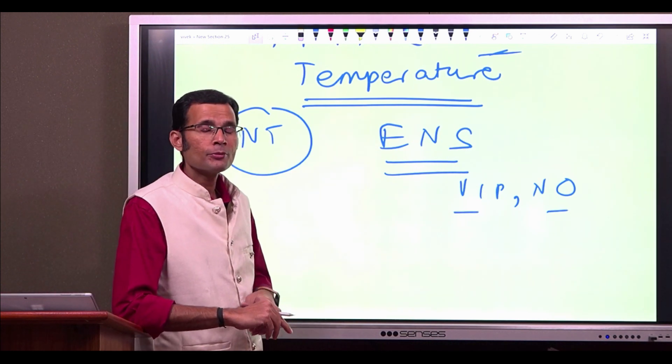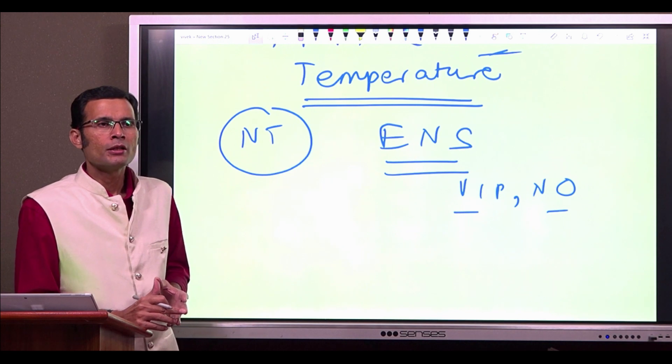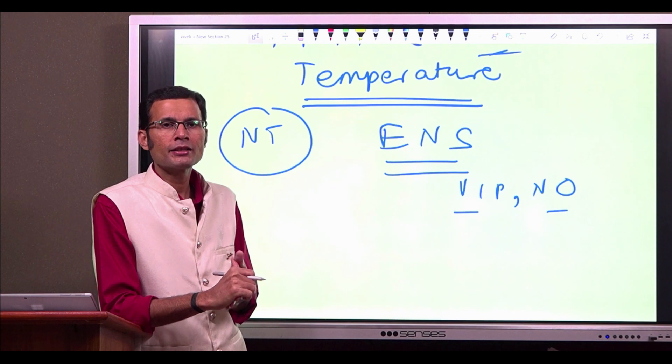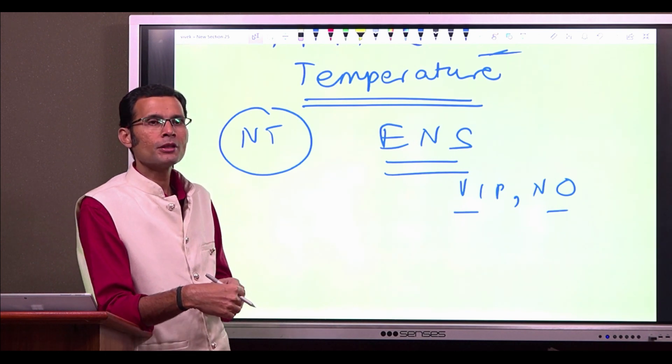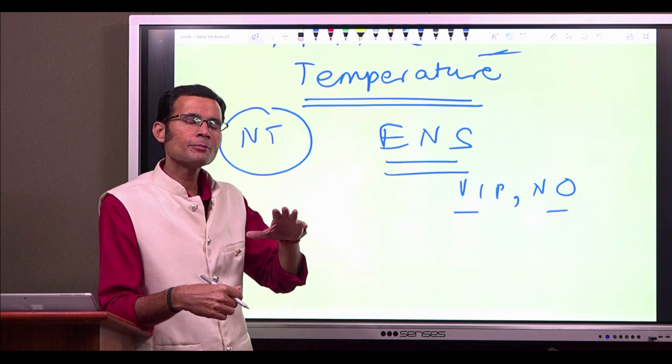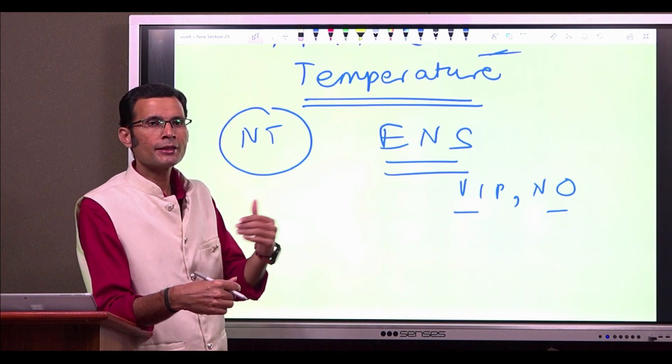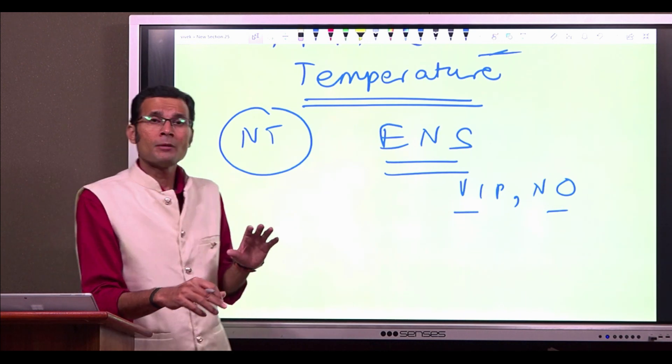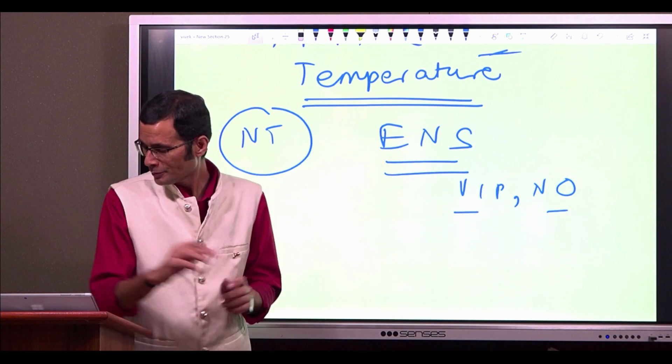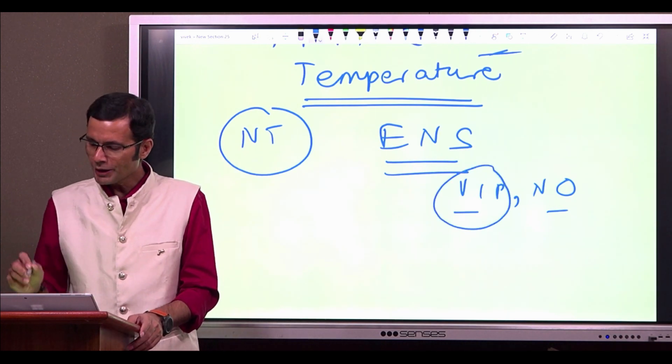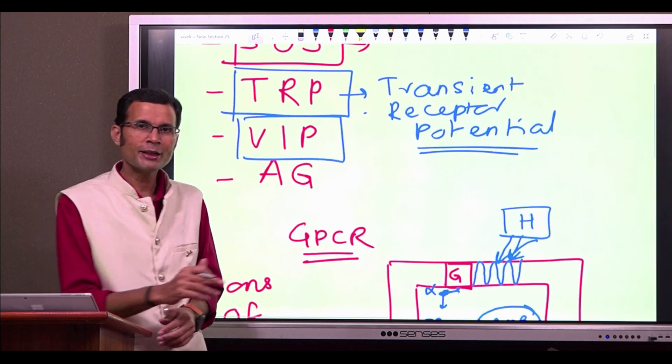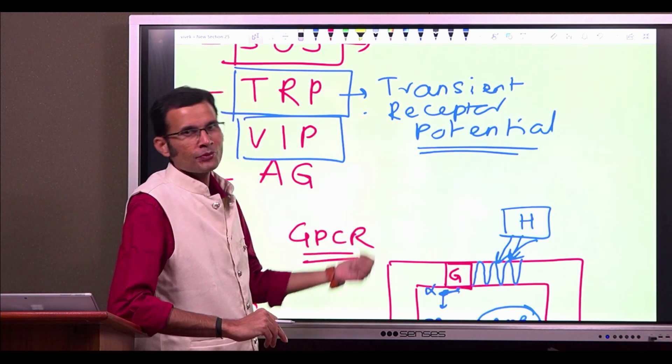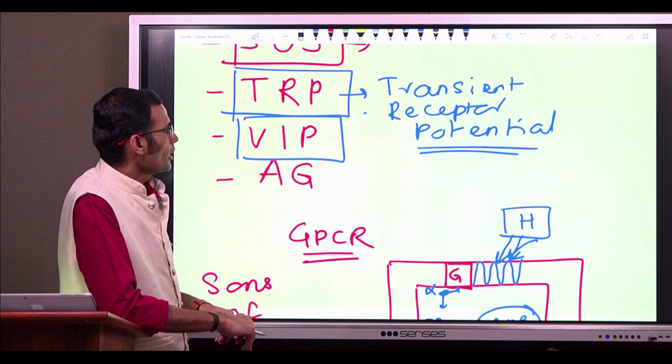This VIP is vasoactive intestinal polypeptide. And generally speaking, it decreases the motility in the digestive tract and therefore, it is deemed to be the inhibitory neurotransmitter, though it stimulates some secretions related to the digestive tract. For instance, salivary secretion is increased by the VIP. So these are the neurotransmitters, but we were talking about the VIP, the normal full form in our day-to-day life is the very important person. But in the digestive tract, it would mean what I mentioned just now.